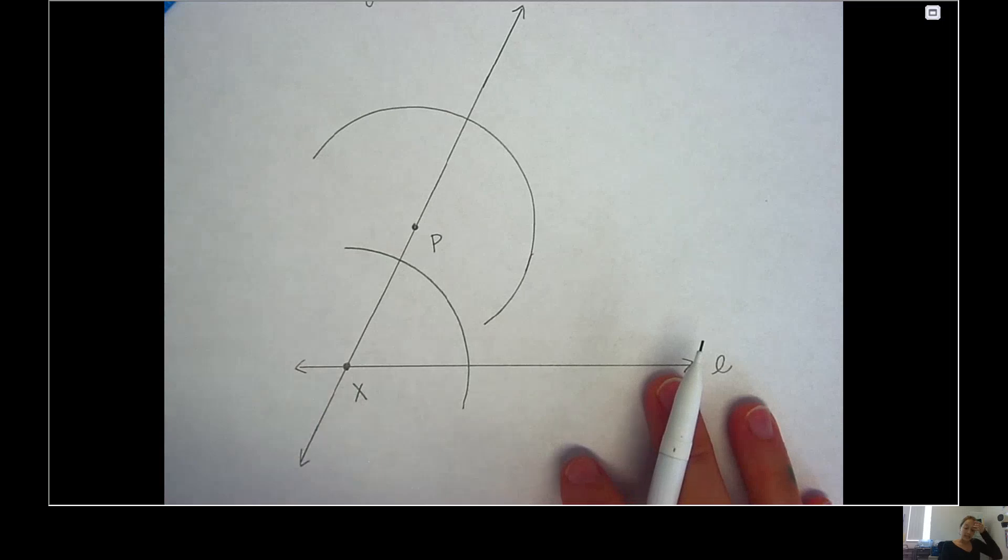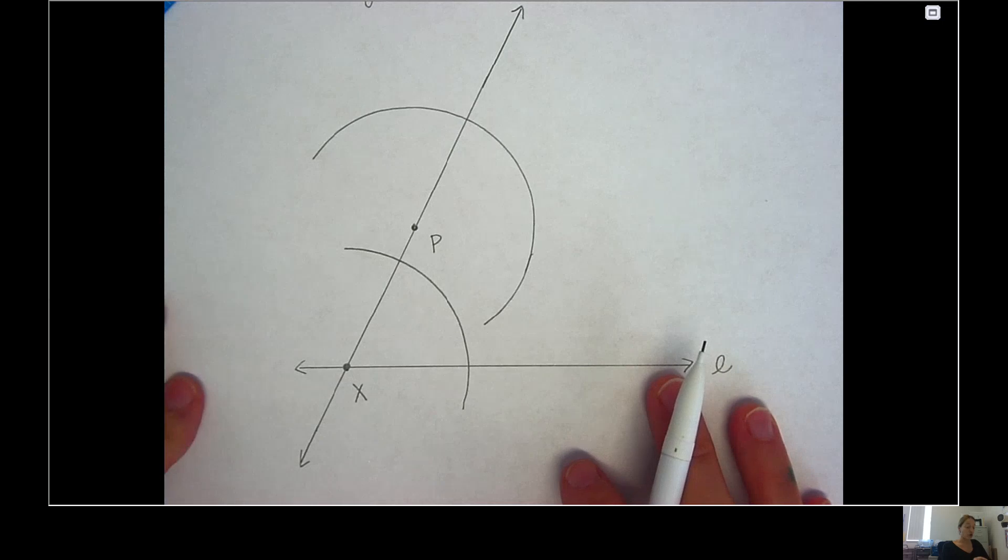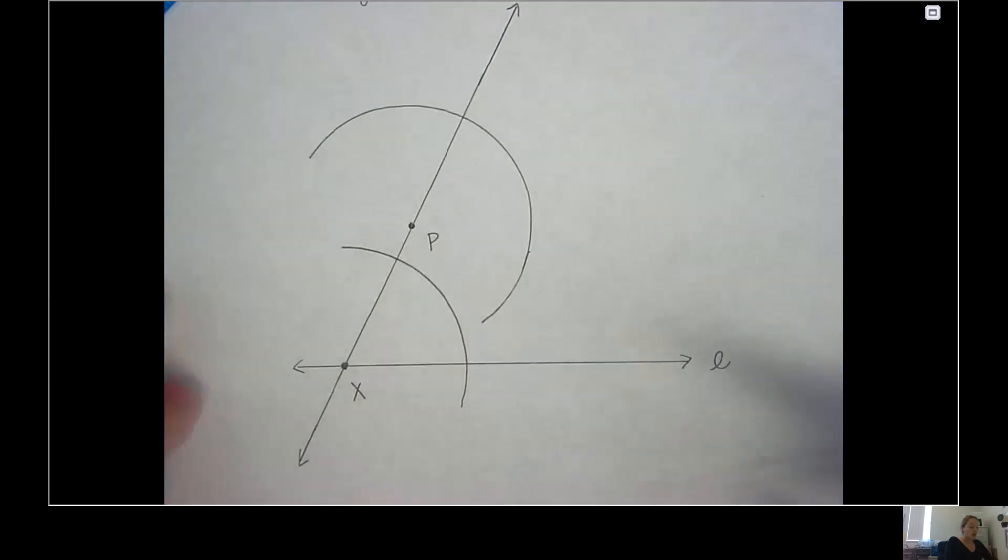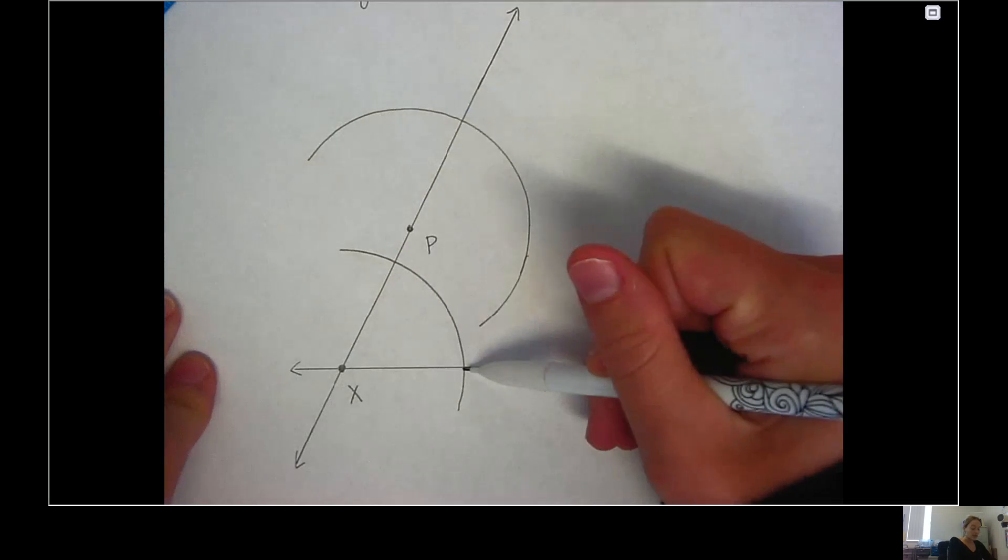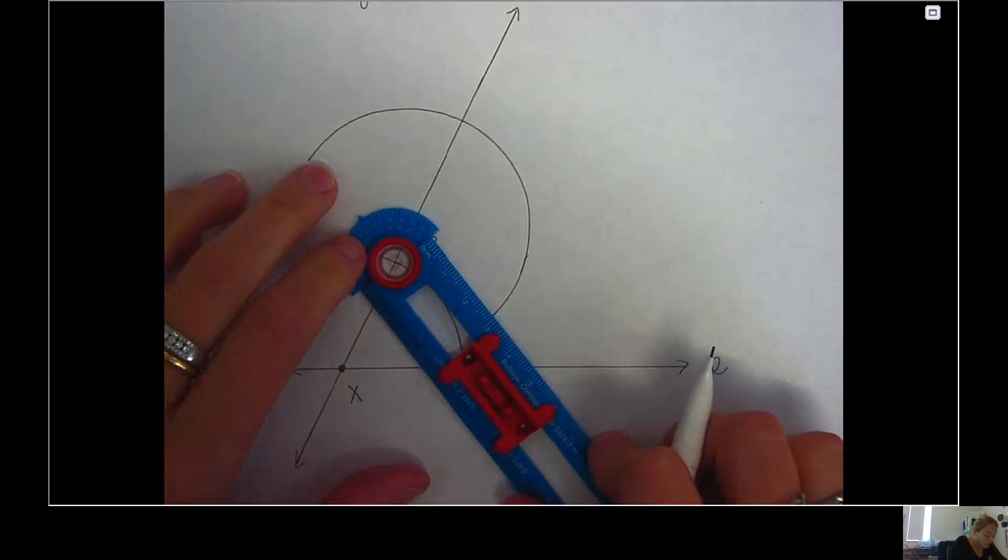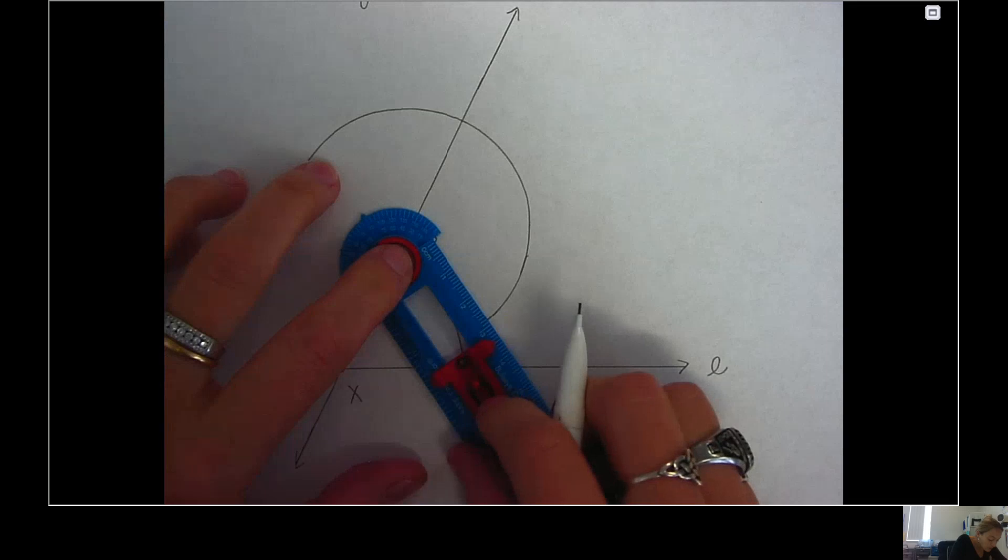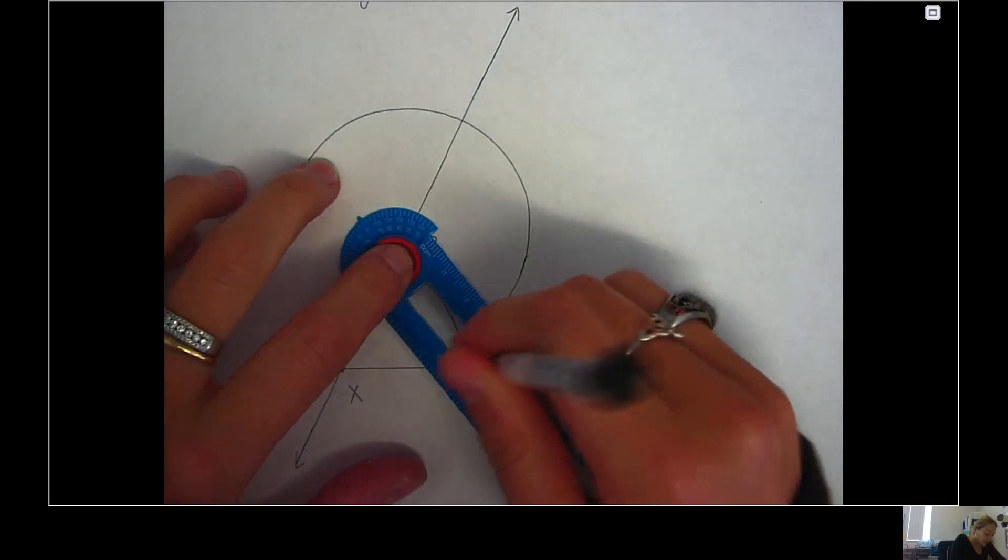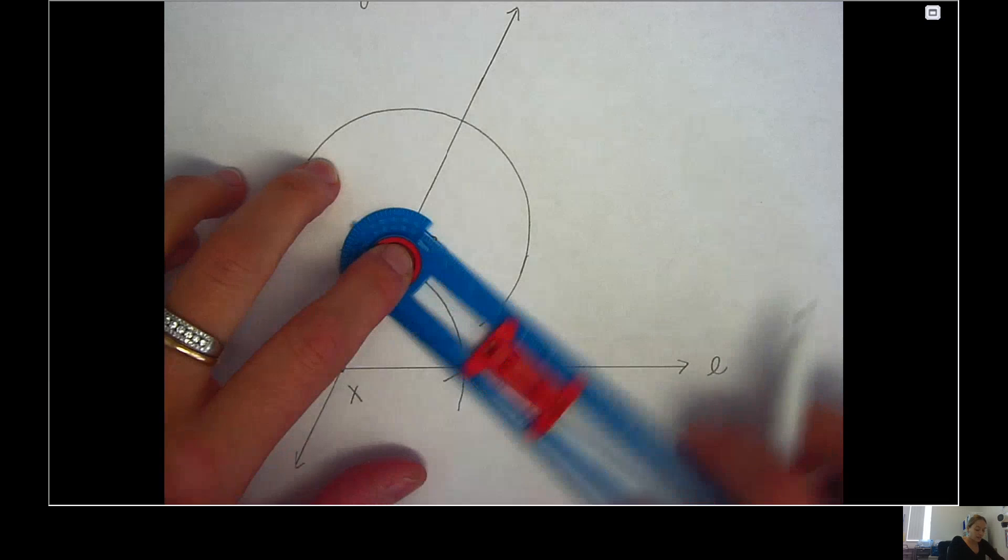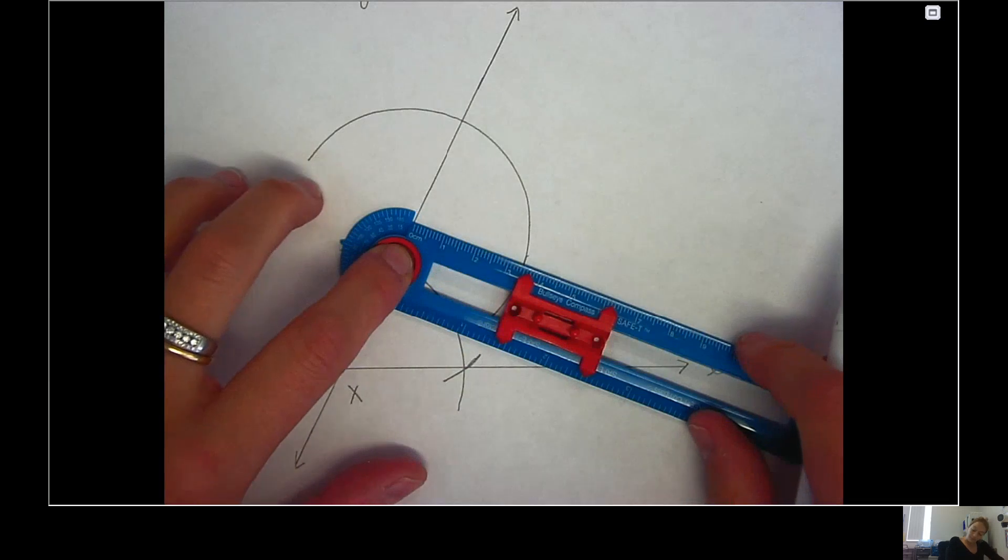Step three, I'm going to set my compass radius to the distance between the two intersection points of my first arc. So here's my first arc, I want my compass to be set to the distance between this point here and this point here, those two small intersections. So if I put it on the top one, I want to move my slide rule to get me to this intersection at the bottom one, which is what I just got there.